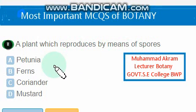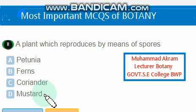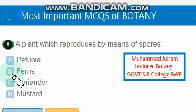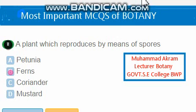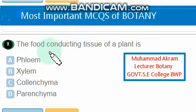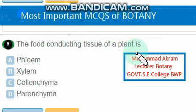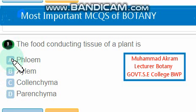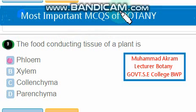A plant which reproduces by means of spores: among petunia, fern, coriander, and mustard — the right option is option B, ferns. The food-conducting tissue of a plant is phloem — option A is the right one. Phloem conducts food in plants.